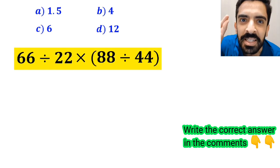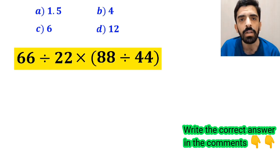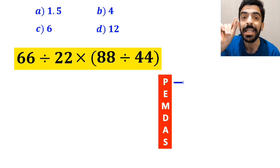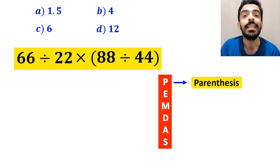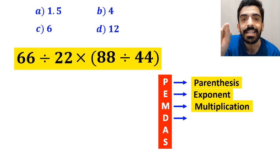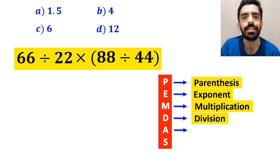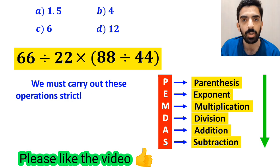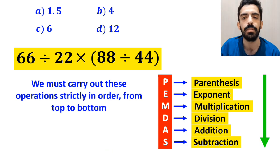Now let's go through this question step by step and solve it together. To solve this question, we need to follow the PEMDAS rule. According to this rule, P stands for parenthesis, E stands for exponent, M stands for multiplication, D stands for division, A stands for addition, and S stands for subtraction. We must carry out these operations strictly in order from top to bottom.